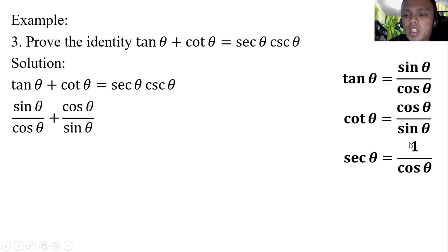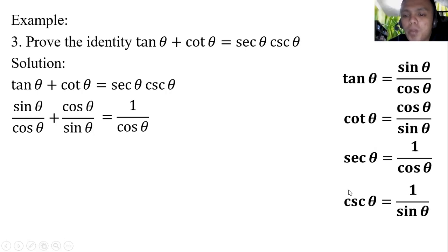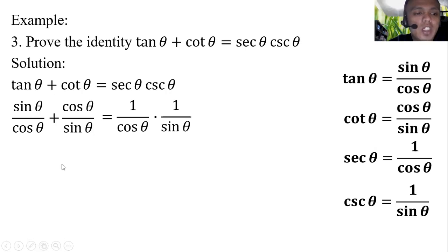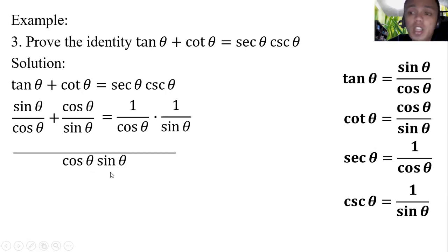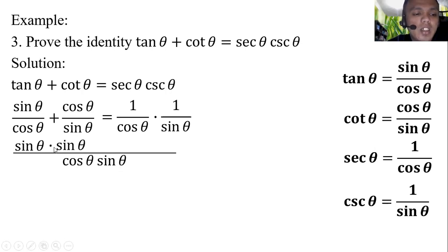Secant theta becomes 1 over cosine theta, and cosine theta becomes 1 over sine theta — and since they are multiplied together, we proceed. Now, to add sine theta over cosine theta and cosine theta over sine theta, the LCD is cosine theta times sine theta. Dividing by cosine theta leaves sine theta, so sine theta times sine theta gives sine squared theta.